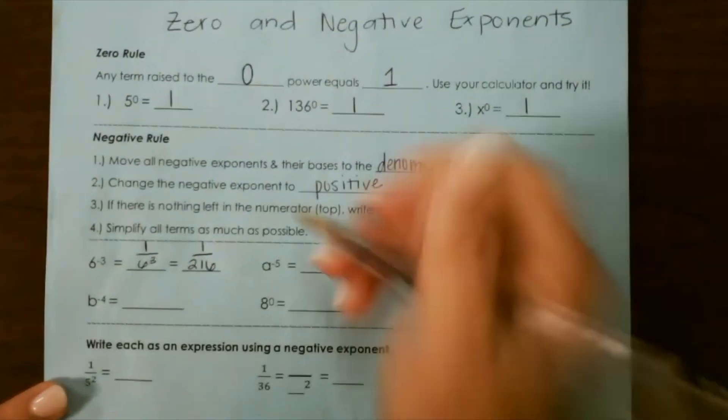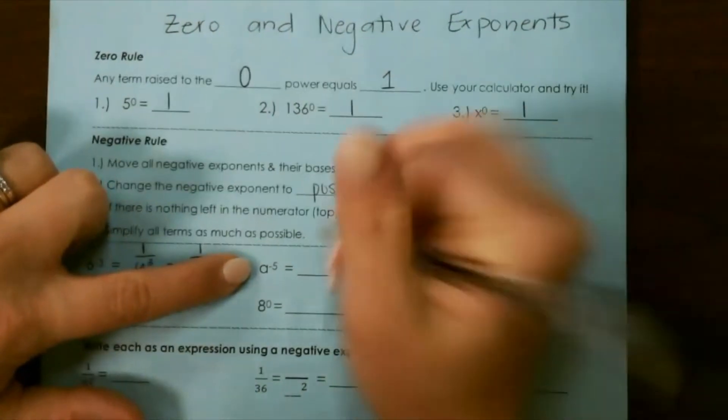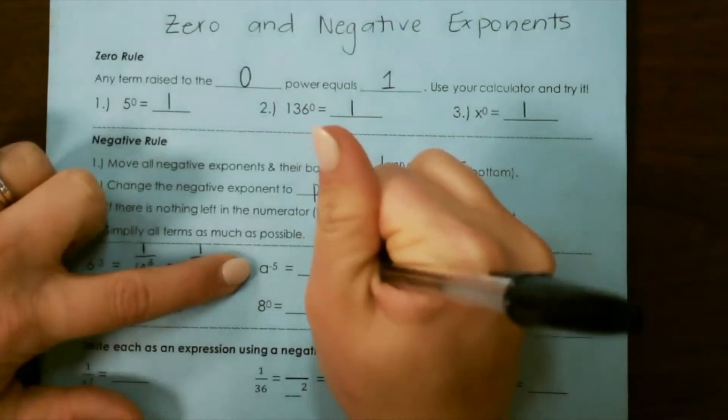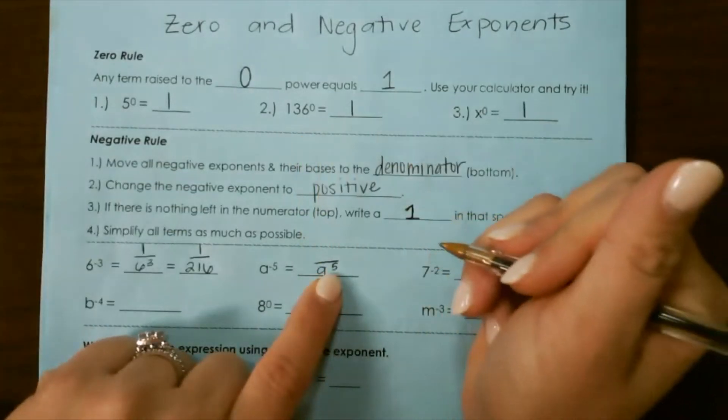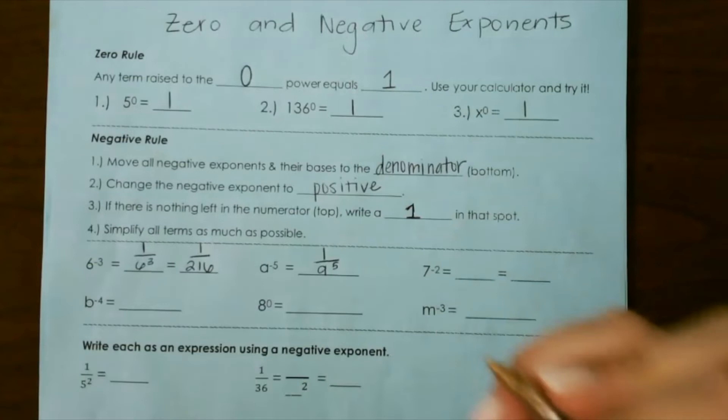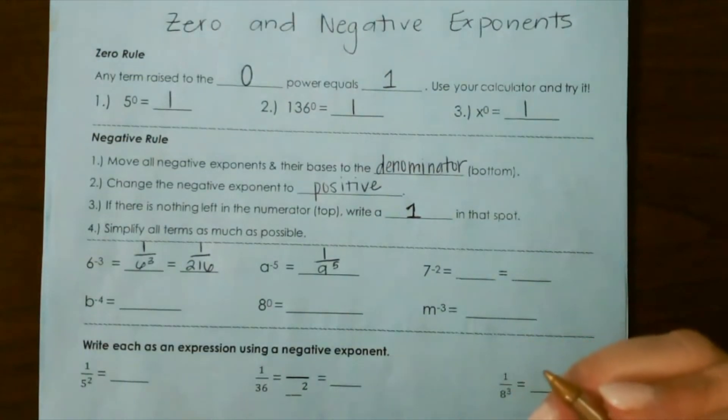For our next one, we take the negative exponent and its base to the bottom, and change the exponent to a positive, and add 1 at the top, and we cannot simplify that any further.